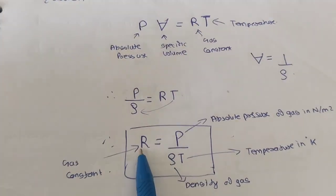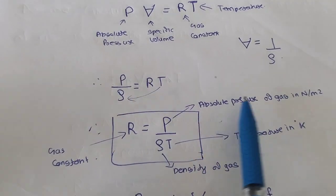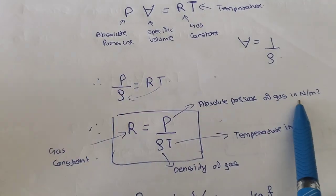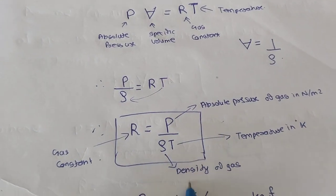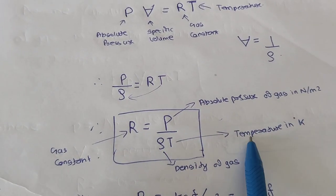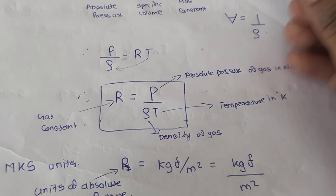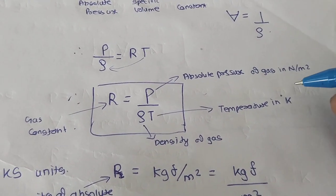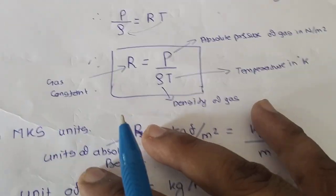R is known as the gas constant. P is the absolute pressure of gas in Newton per meter square, density of gas is in kg per meter cube, and temperature is in degree Kelvin. Note that temperature must be taken in degree Kelvin, not degree Celsius.